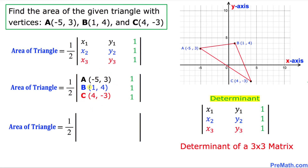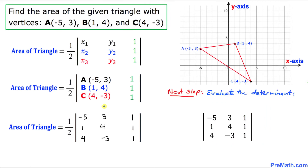So finally these points become: I can write as negative 5, 3, 1, 4, 4, negative 3, and these entries 1, 1, 1 are going to stay the same. And now in the next step we are going to find the value of this determinant.